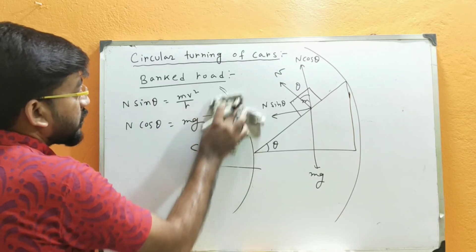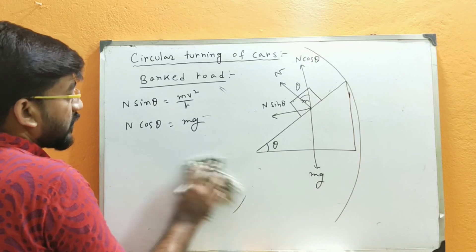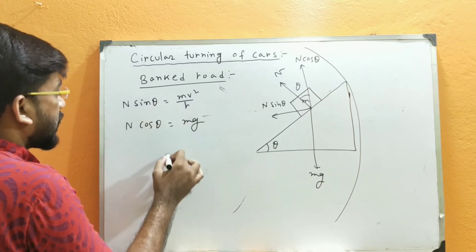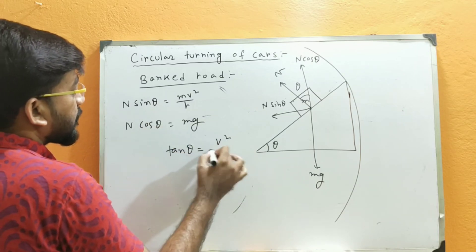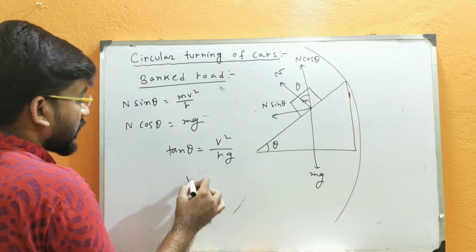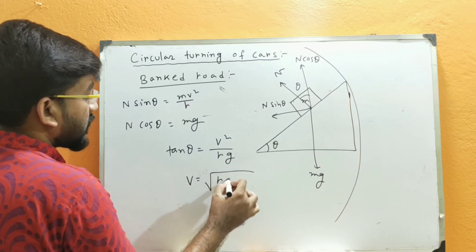Now if you divide these two equations, you get tan theta equals v squared by rg. So v equals the square root of rg tan theta.